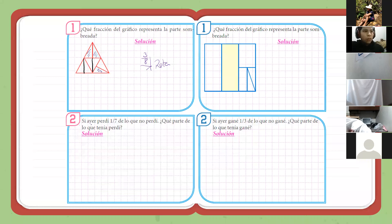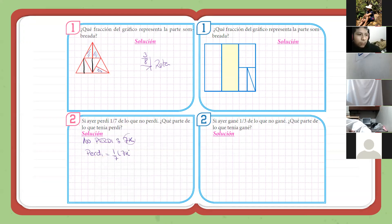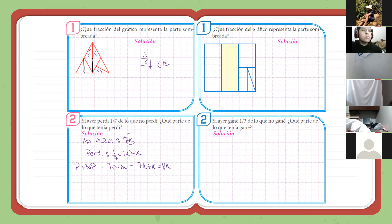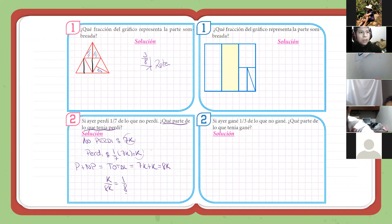Este ejercicio es un clásico. Dice: si perdí un séptimo de lo que no perdí, vamos a asumir que lo que no perdí va a ser 7K. ¿Por qué 7K? Para que lo que perdí, que vendría a ser un séptimo de aquello que no perdí, me salga un valor entero: K. Lo que perdí más lo que no perdí representa el total: 7K más K es 8K. ¿Qué parte de lo que tenía perdí? Perdí K de un total de 8K, entonces será K entre 8K, que vendría a ser un octavo.